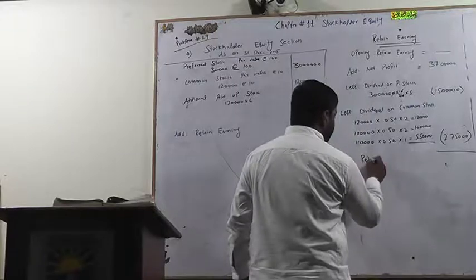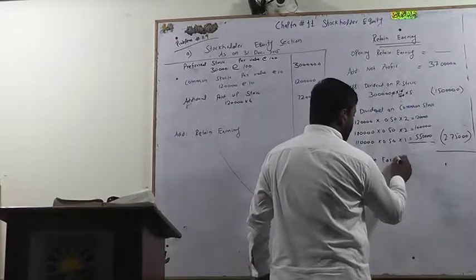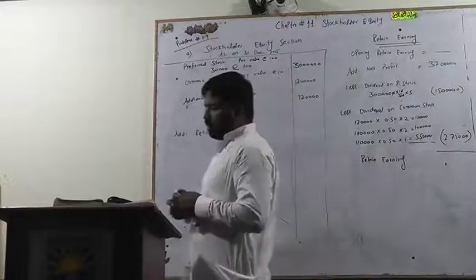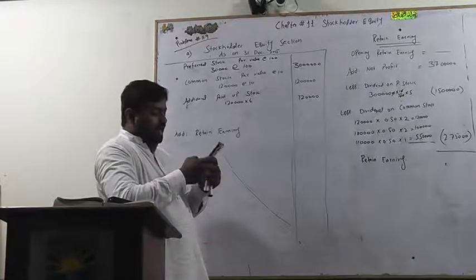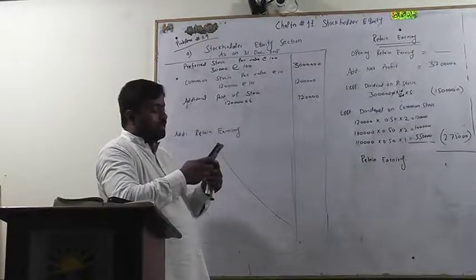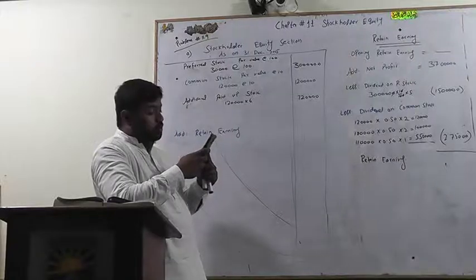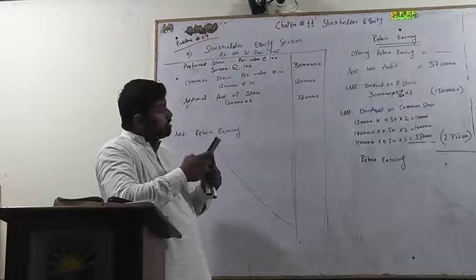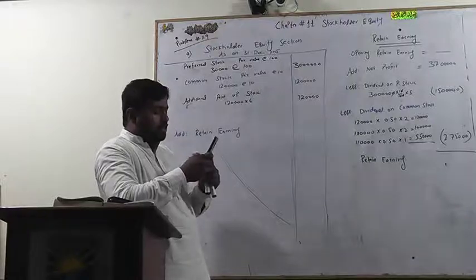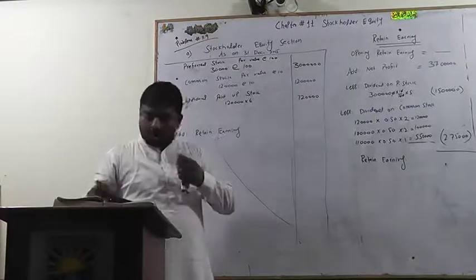That is closing or retained earnings of 2,75,000, which is the total dividend. You have the total profit that is 37,000,000. And we have the dividend that is 15,000,000, and after giving these 2,75,000, that is the common stock.